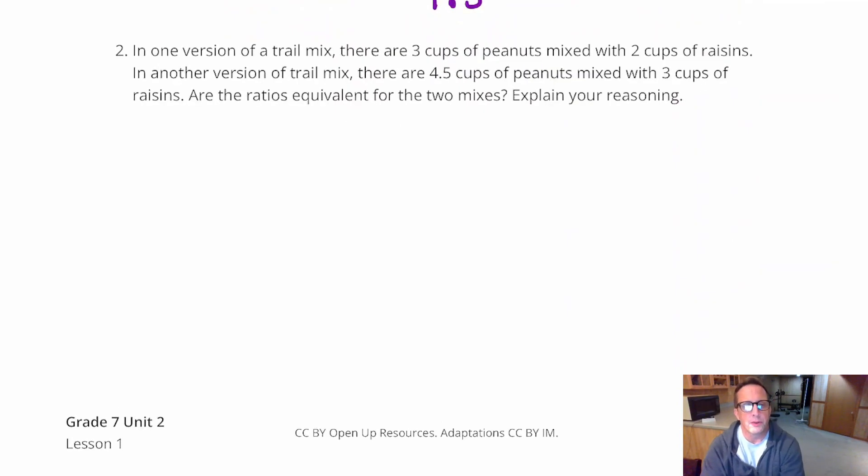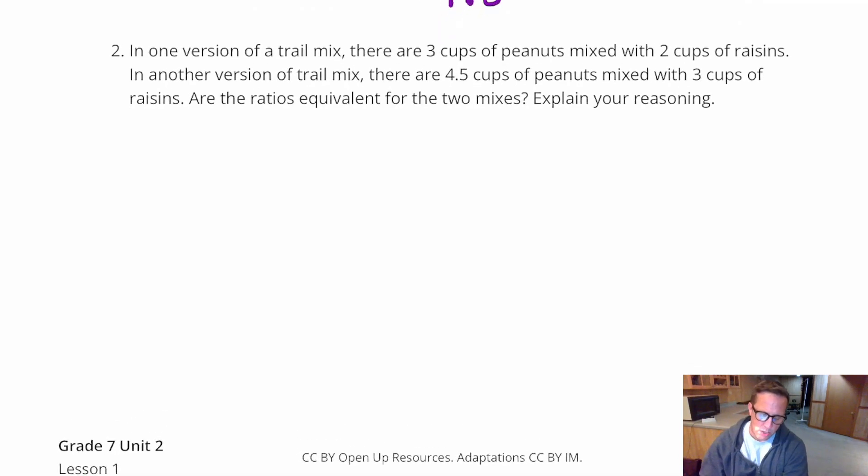All right, for number two, it says, in one version of a trail mix, there are three cups of peanuts mixed with two cups of raisins. In another version of a trail mix, there's four and a half cups of peanuts mixed with three cups of raisins. Are the ratios equivalent for the two mixes? Explain the reasoning.